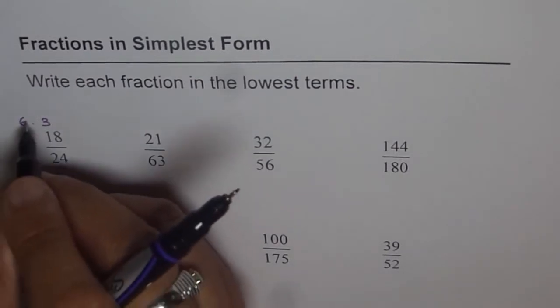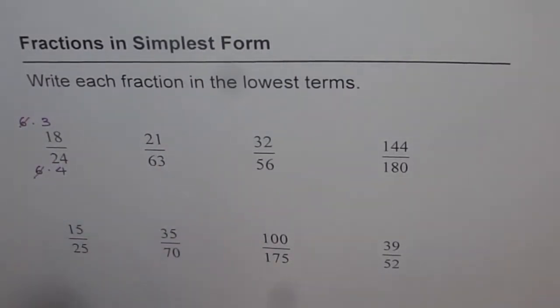So we can cancel this off, that means 6 and 6. What remains is the fraction in lowest terms, 3 over 4.